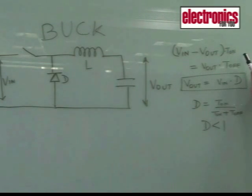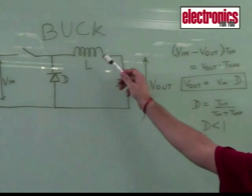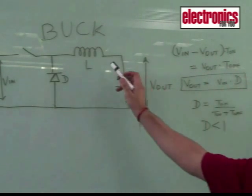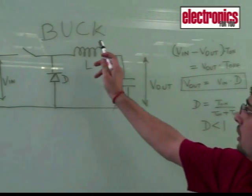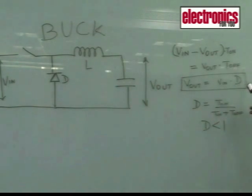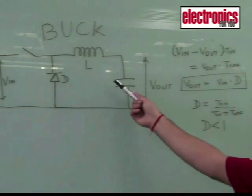So when the switch is on, the voltage across the inductor is V_in minus V_out. And when the switch is off, the current in the output freewheels through the diode, so the voltage across the inductor is V_out minus the diode drop, which is almost negligible.